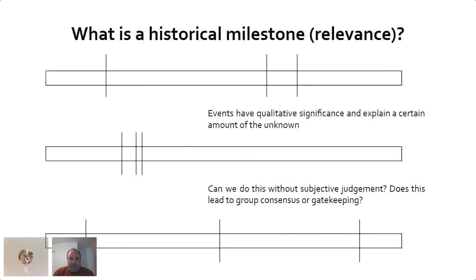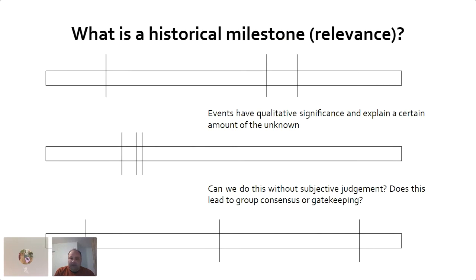With that framework, think about history: what is a historical milestone and what is the relevance of a historical event? These abstract diagrams represent events in time — events that might have qualitative significance and explain a certain amount of the unknown, like some innovation, some paper, or some person that did something great. But can we do this without subjective judgment, in an objective way?